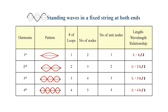For the first harmonic, the length-wavelength relationship is L equals λ/2. For the second, it is 2λ/2. For the third, 3λ/2. Thus, we conclude that L equals Nλ/2.